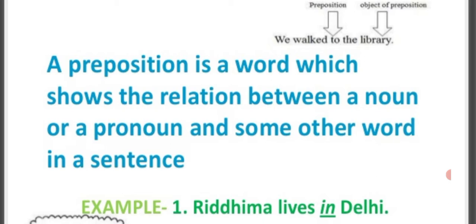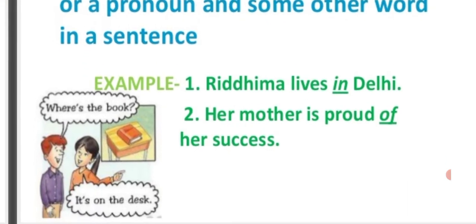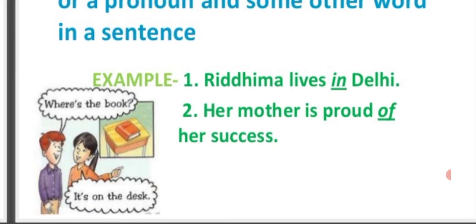A preposition is a word which shows the relation between a noun or a pronoun and some other words in a sentence. For example, number one: Ridima lives in Delhi. Here we are showing the relationship of Ridima with Delhi — the relation is that Ridima lives in Delhi.